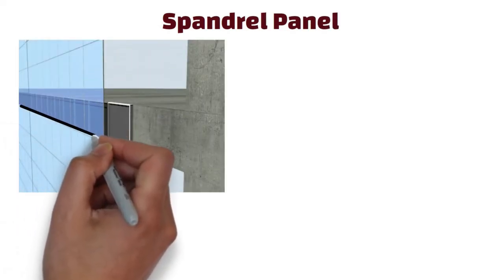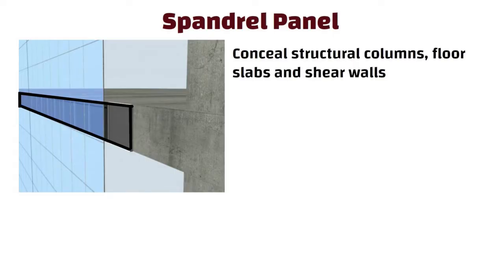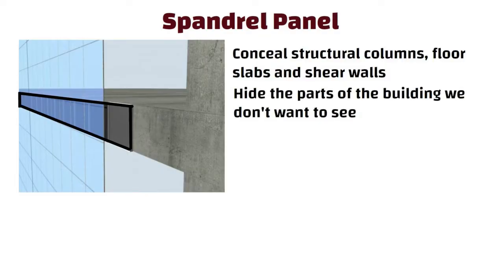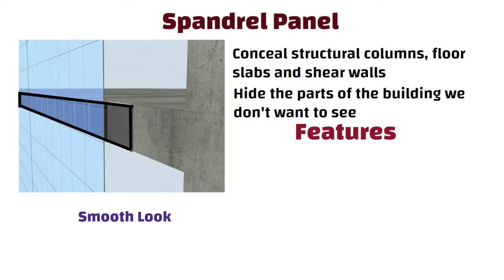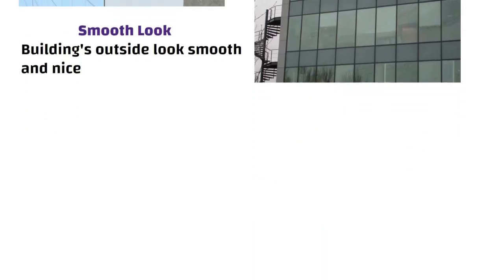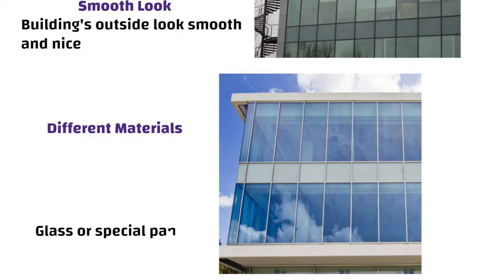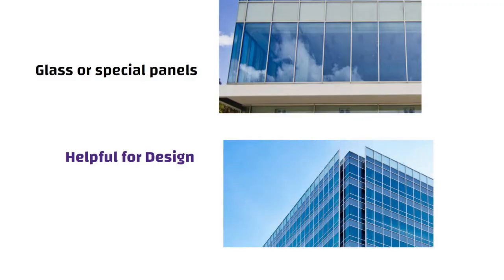Spandrel panel. Spandrel panels are the area of a curtain wall which conceal structural columns, floor slabs and shear walls — basically, they hide the parts of the building we don't want to see, like big walls and columns. Features: smooth look — spandrel panels make the building's exterior look smooth and nice; different materials — they can be made from many things like glass or special panels; helpful for design — architects use spandrel panels to make the building look pretty and organized.